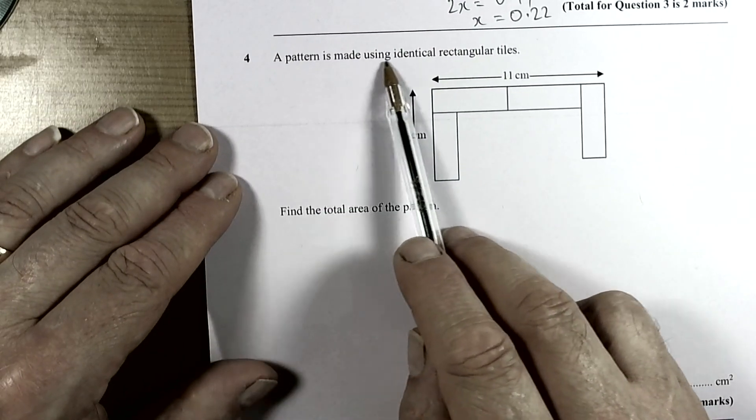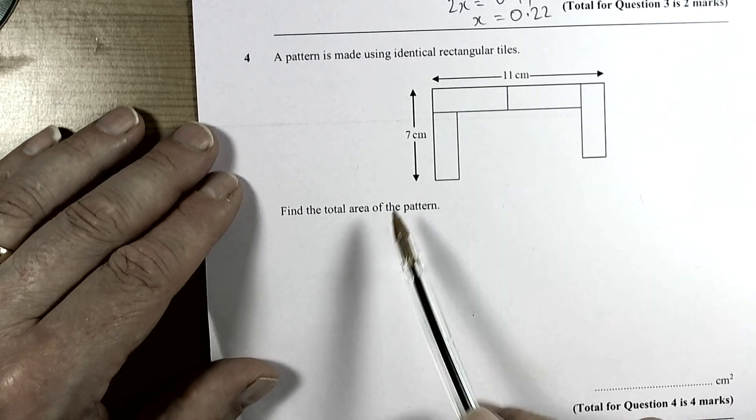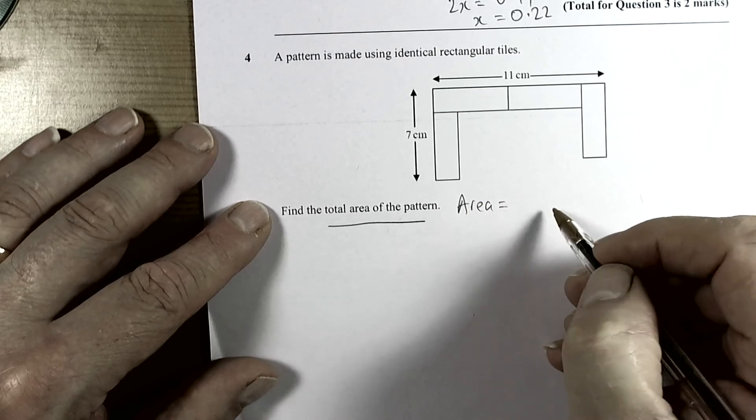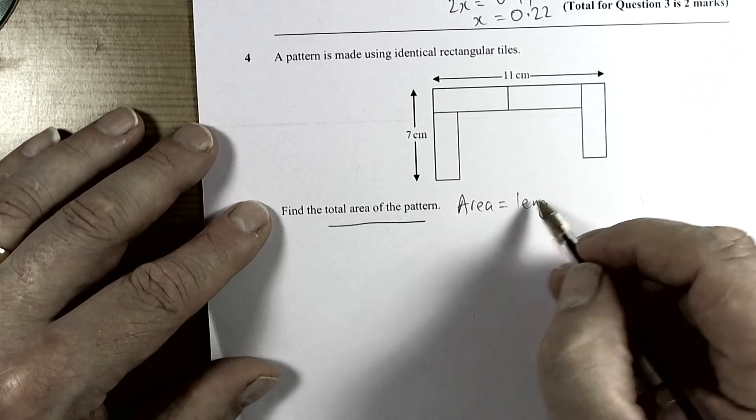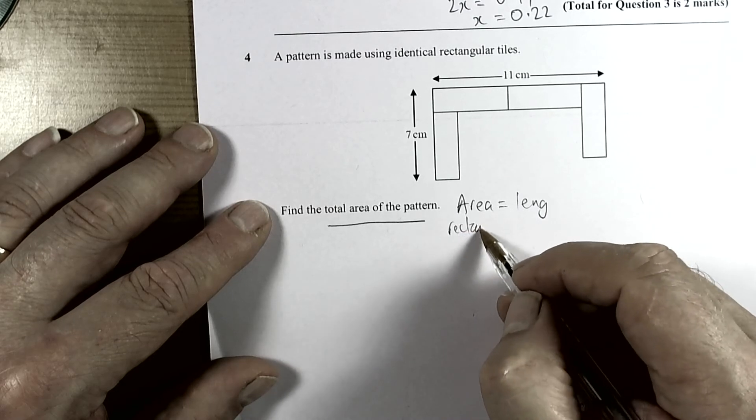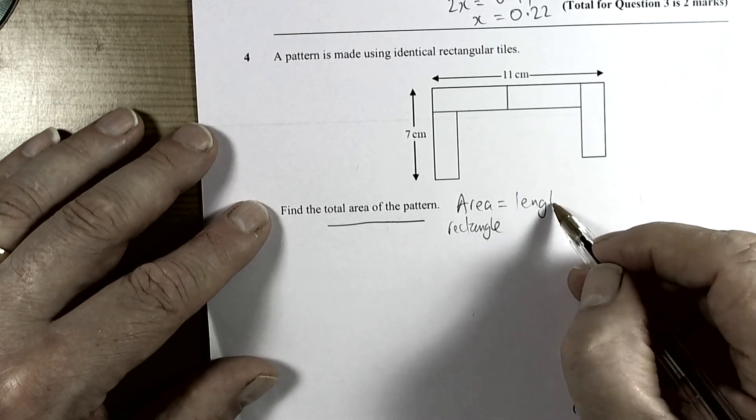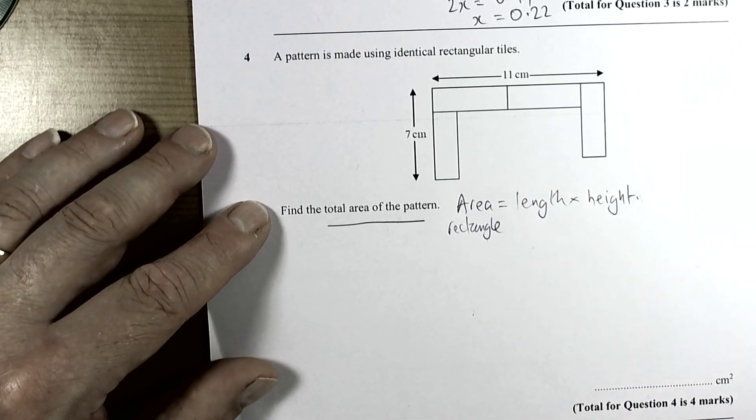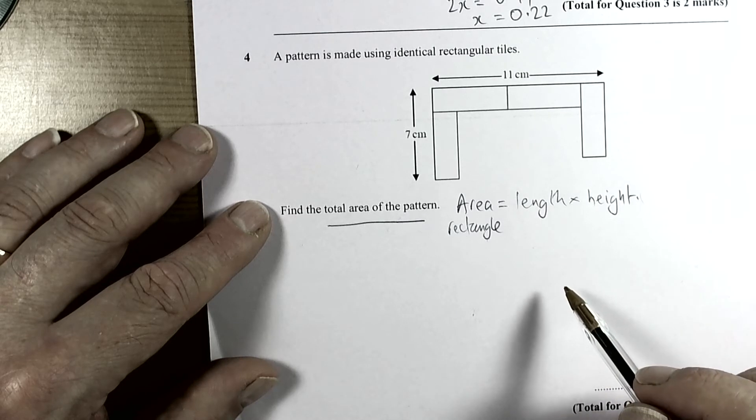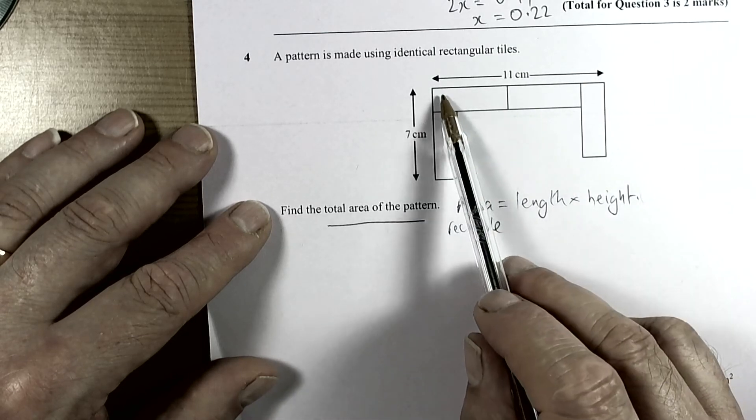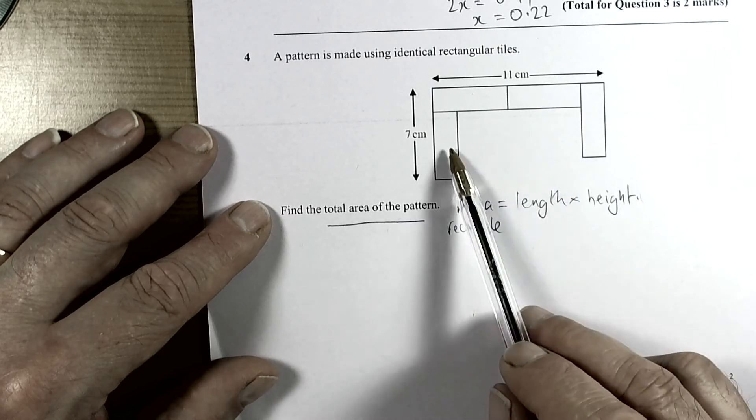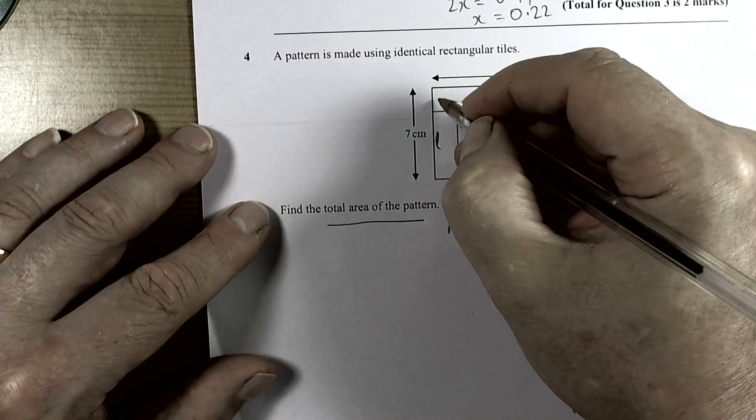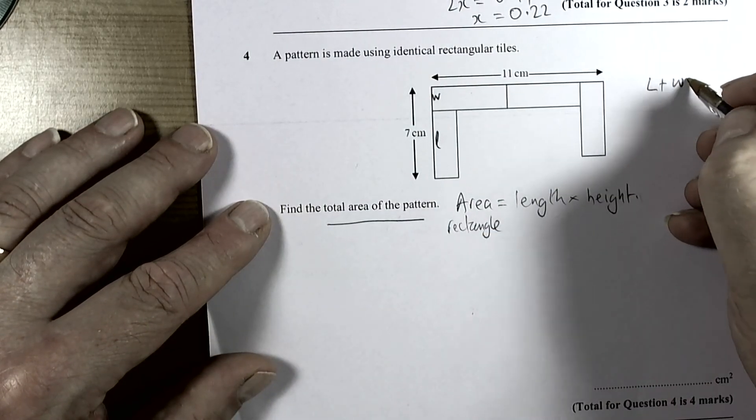Question 4 talks about a pattern being made using these rectangular tiles. We're going to find the total area of the pattern. We know this is about rectangles, so the area of a rectangle is equal to the length times the perpendicular height. Ideally we need to know the length of the rectangle and the width of the rectangle. At the moment we know what two lengths and a width is, and we know what a length and a width is. If we call that l and w, then we know that l plus w equals 7.